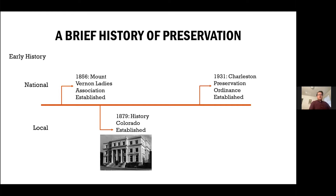There's certainly no single beginning to the history of preservation, but a pretty significant event was in 1856 when a group of well-to-do women founded the Mount Vernon Ladies Association, which had the goal of preserving Mount Vernon, the historic home of George Washington. That was one of the very first instances of private individuals coming together to save a building, taking place at a time when our country was going through a lot of changes with the Industrial Revolution and leading up to the Civil War. A little bit later, in 1879, History of Colorado was established very early within the history of the state, specifically founded as a museum to record and present the history of Colorado.